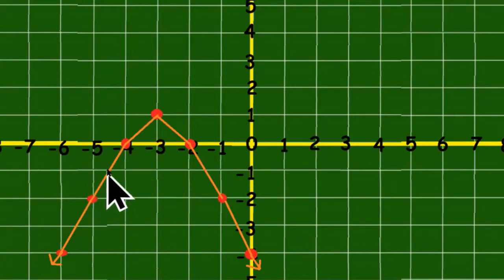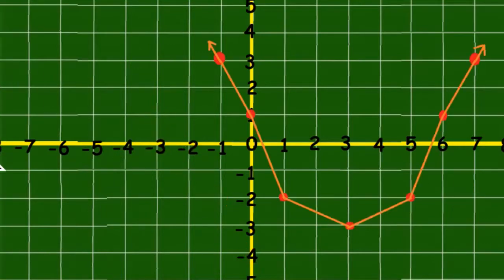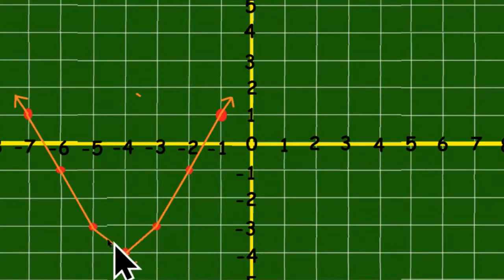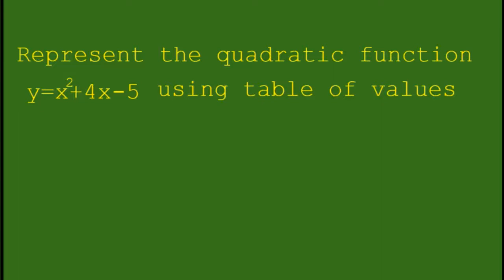Sometimes the parabola opens downward, sometimes it opens upward. So this is downward, and this is upward. In this example, we will represent the quadratic function y equals x squared plus 4x minus 5 using a table of values.